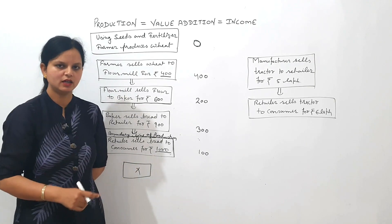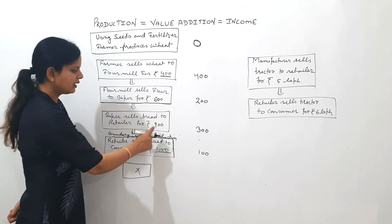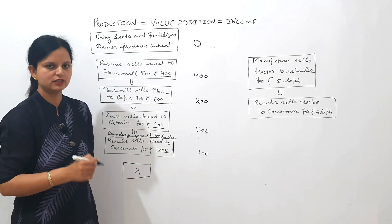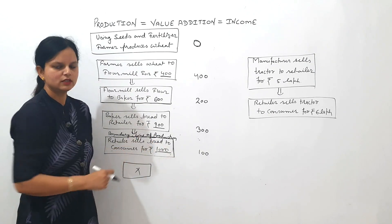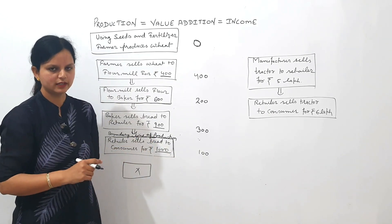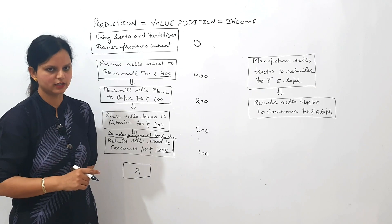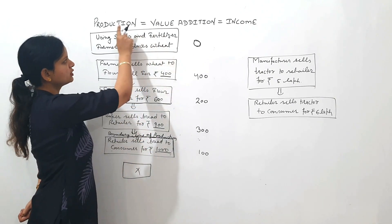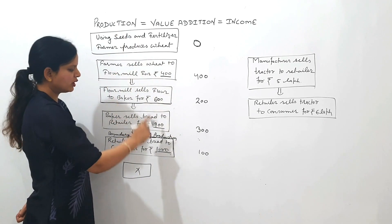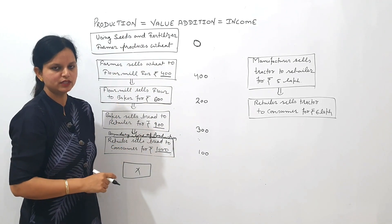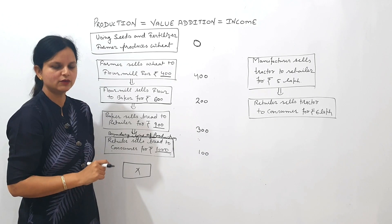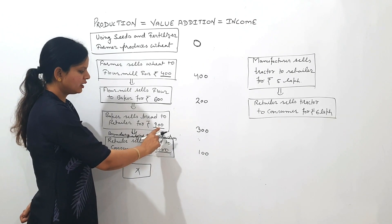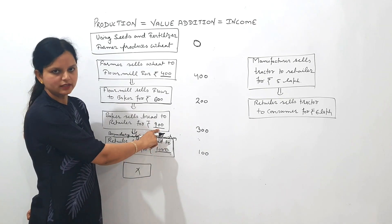It will be finally consumed by the consumer. Till the good is with the retailer, value addition still continues. Value addition still continues means production still continues. When production is still continuing, it means the product is not ready for its final users. That's why till this point the good will be deemed as intermediate.